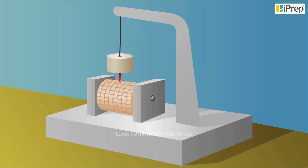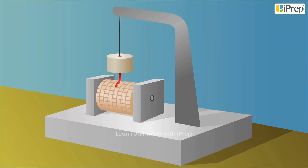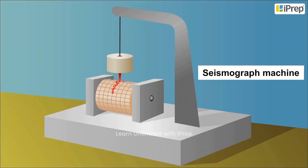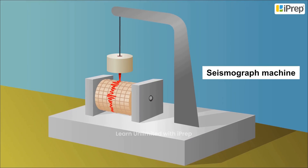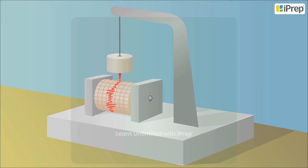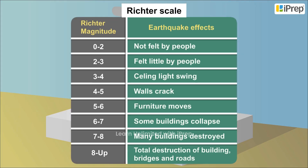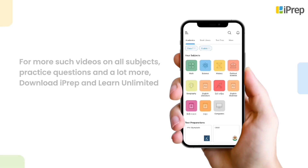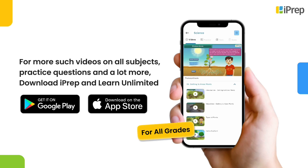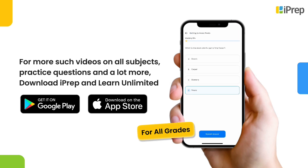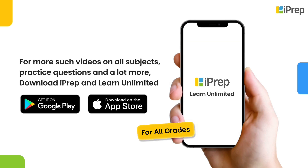You can confirm an earthquake using a seismograph machine, and its magnitude can be measured using a Richter scale. For more such videos on all subjects, practice questions, and a lot more, download iPrep and learn unlimited.